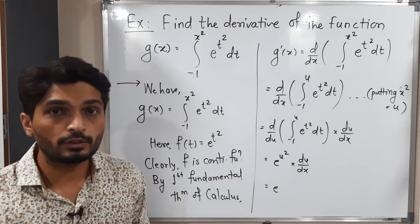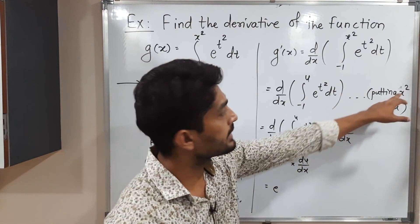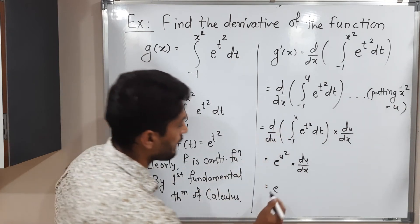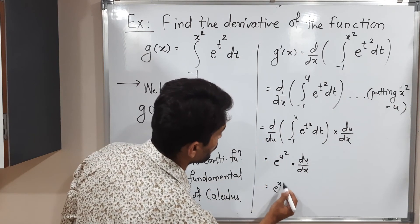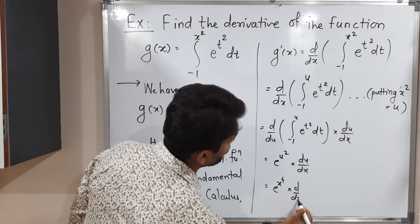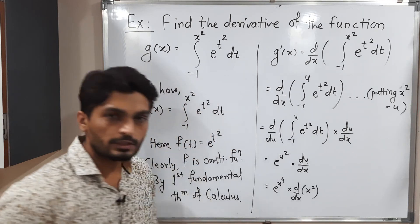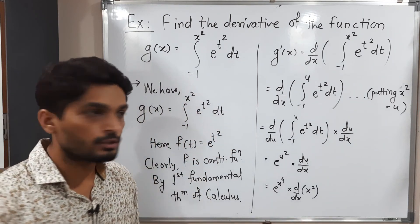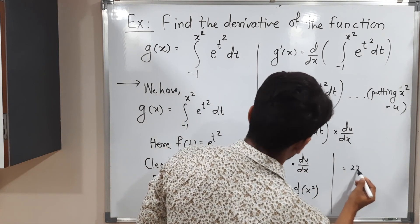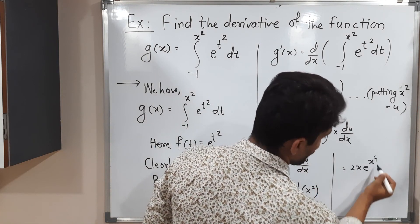So this equals e raised to u square. But what is u? U is x square. So we have x square squared, which means x raised to 4. The derivative of u, which is x square, is 2x. So the final answer is 2x times e raised to x raised to 4.